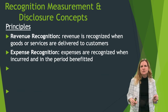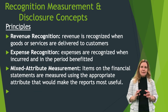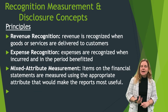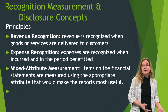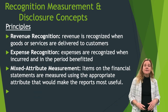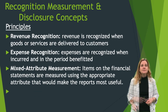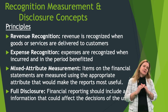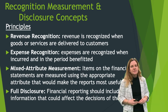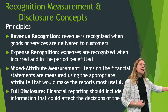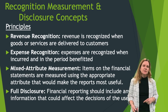Mixed attribute measurement means we use the appropriate attribute to measure an item on the financial statements. For example, plant assets like buildings and automobiles are usually recorded at cost; inventory would be at net realizable value; bonds would be at present value. Full disclosure means anything that could cause a decision maker to make a different decision must be disclosed. For example, contingent liabilities — if there is a contingency like a big lawsuit or recall, even if we can't estimate the amount, it needs to be disclosed in the financial statements.